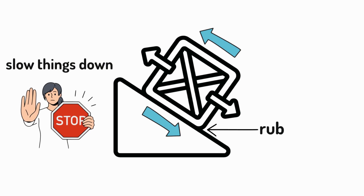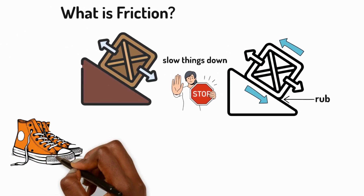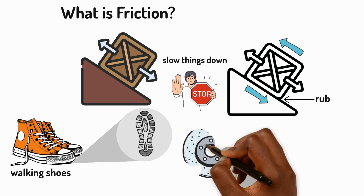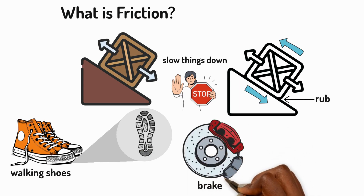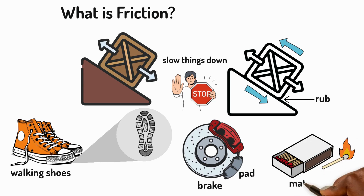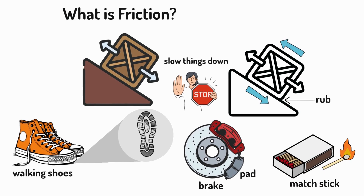Some everyday examples of friction are walking shoes — they have treads underneath them that grip the ground, allowing us to walk without slipping. Or when we press the brakes in a car, brake pads rub against the wheels, slowing the car down. Striking a match against a rough surface generates enough friction to create a spark and light the match.